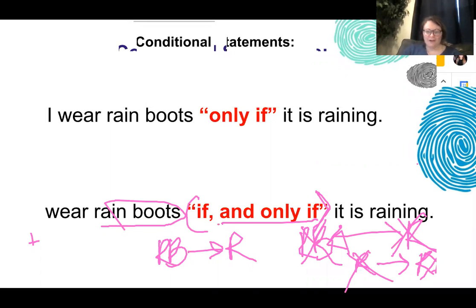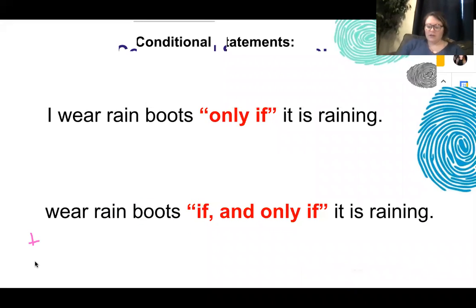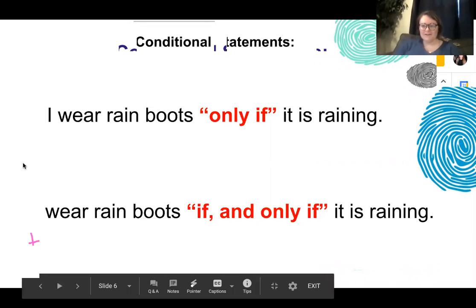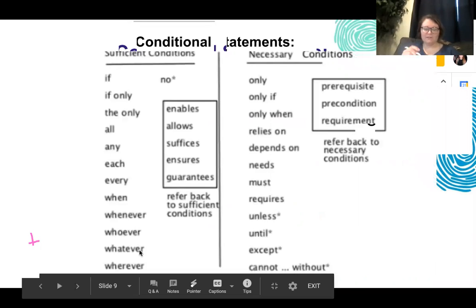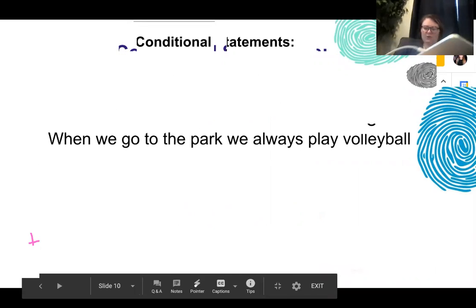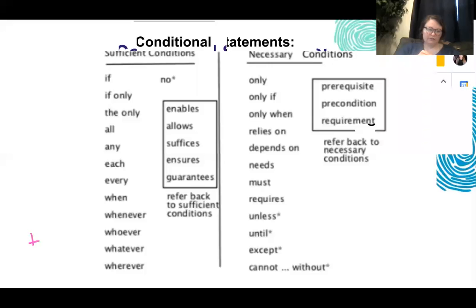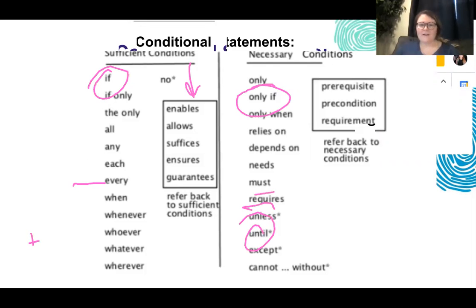I hope this was helpful in understanding a little bit more of conditional logic. Really focus on 'only if' and 'if'. Today we talked about 'if', 'only if', and 'if and only if'. We mentioned 'every', and I'm going to continue making videos on more challenging ones like 'unless', 'requires', or 'until', so we can get faster on our LR sections. Hope this helps.